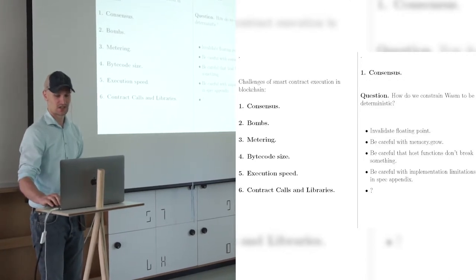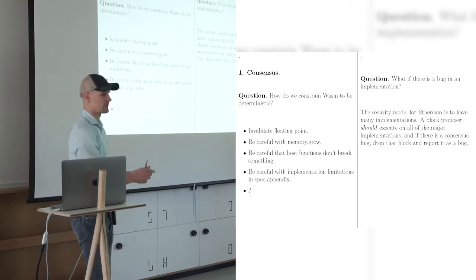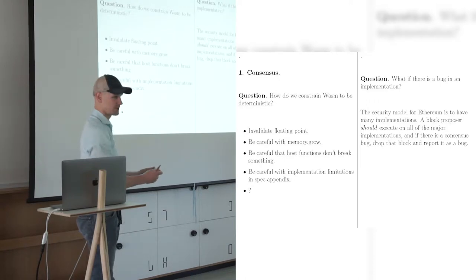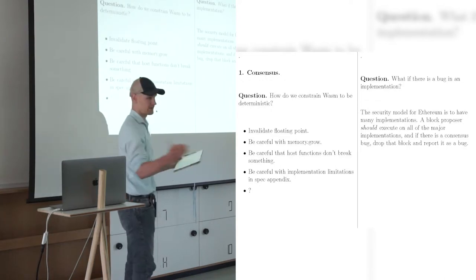On consensus, so Ethereum's model, what if there is a bug? There could still be a bug, maybe not spec level, but implementation level. So Ethereum is a little bit unique, unlike other ones. So the security model is to have many implementations, so diversification, independently implemented by different teams.